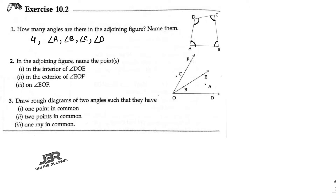Next, number two: in the adjoining figure, name the points in the interior of angle DOE. So DOE is that one. The interior point is point A — that is the interior point. In the exterior of angle EOF, the exterior point is C. You can also write down point A and point D as exterior points of angle EOF.